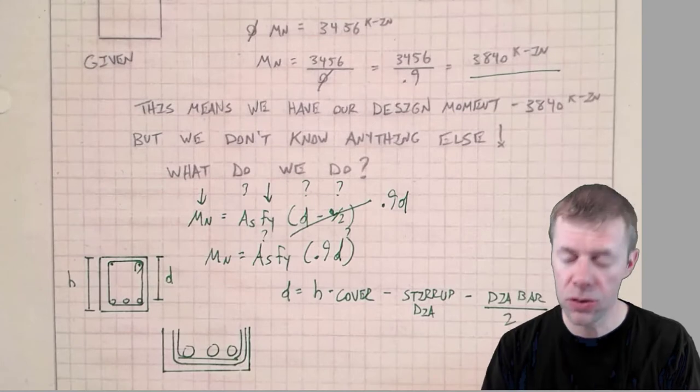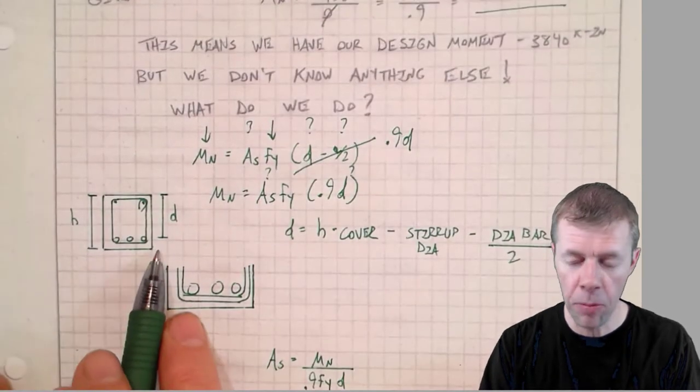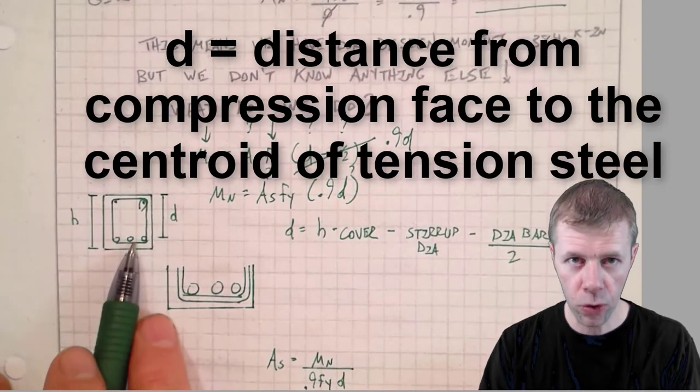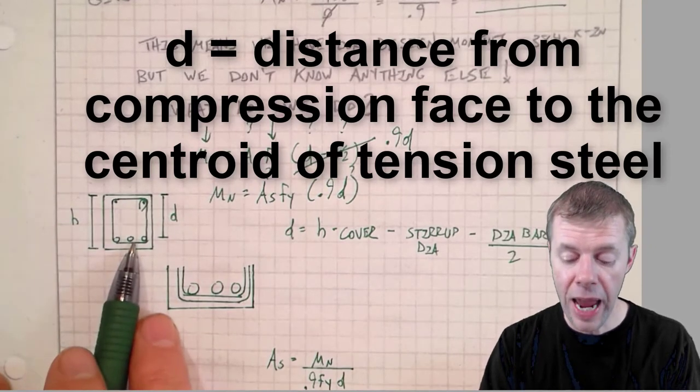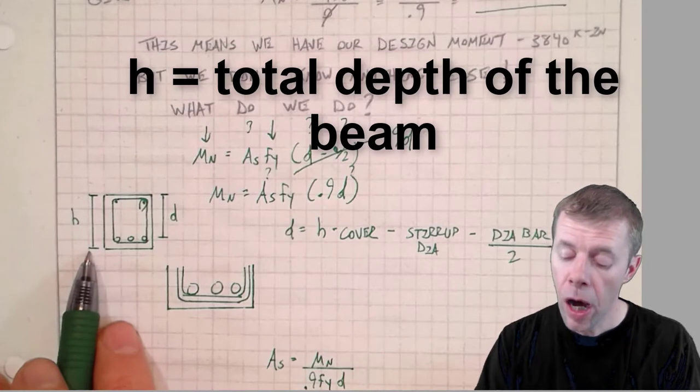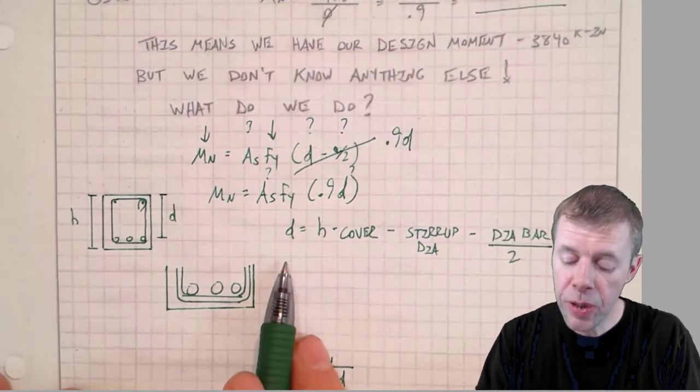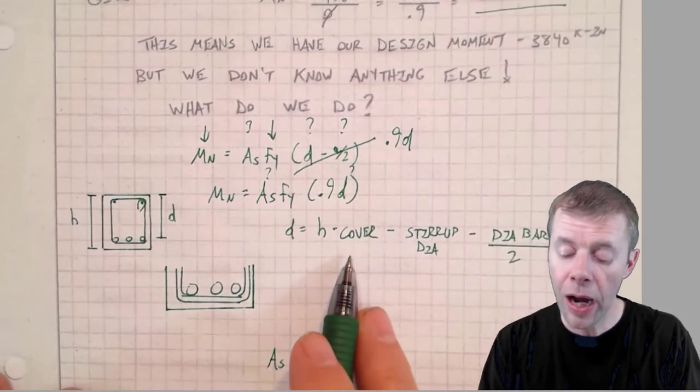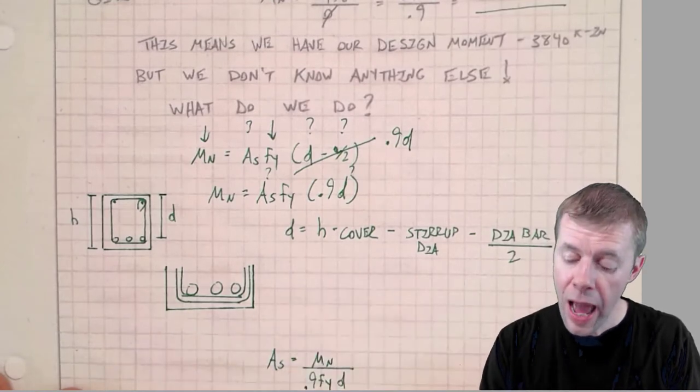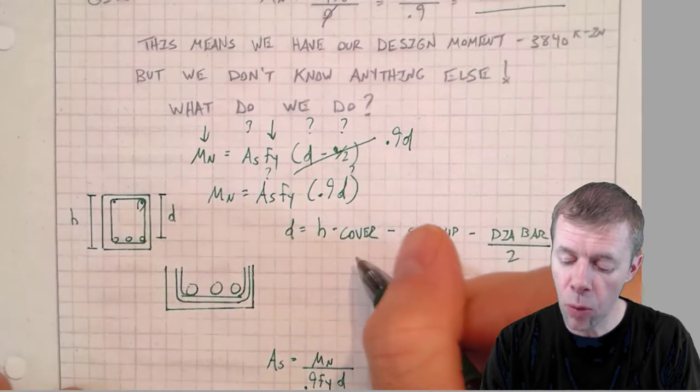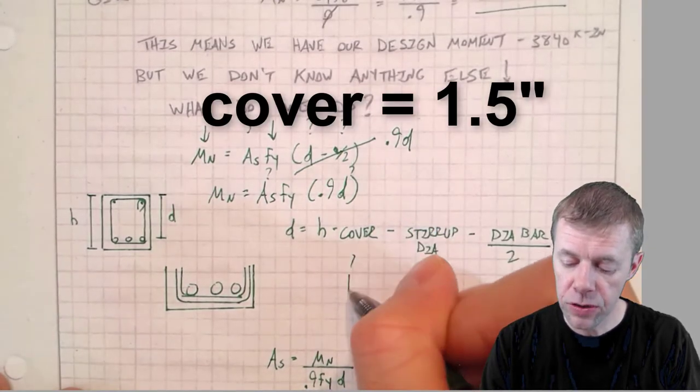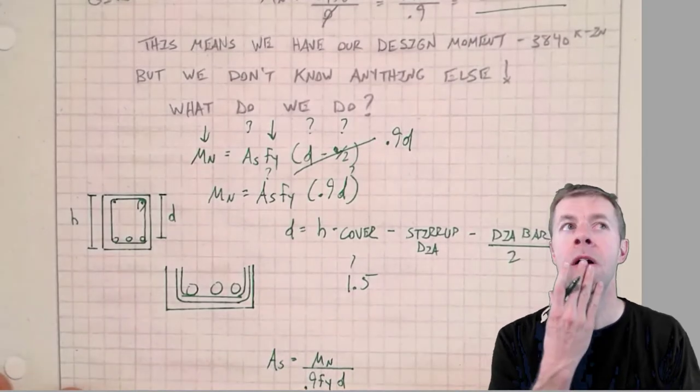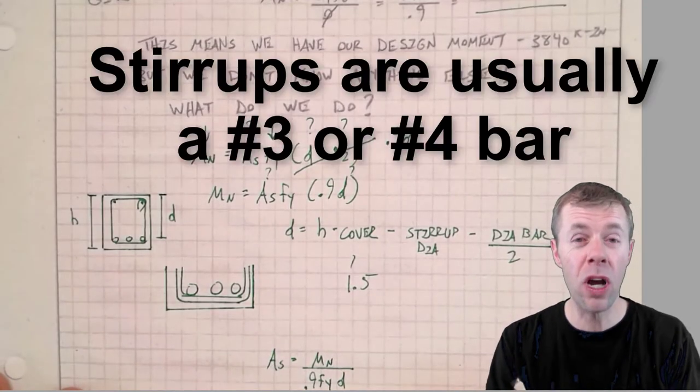I still don't know As and I still don't know my D, so let's get a D. If you look at a cross-section, D is the distance from the compression fiber to the centroid of the tension steel, and h is the total depth. I can find my D because I know some things. I know my cover is gonna be 1.5 inches for interior exposure.